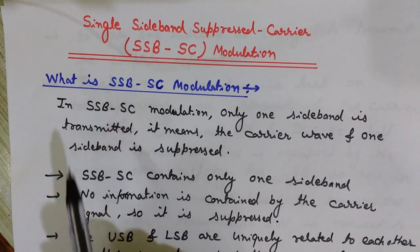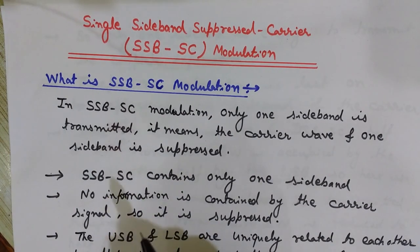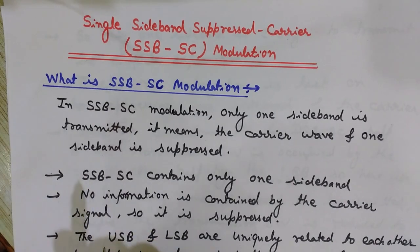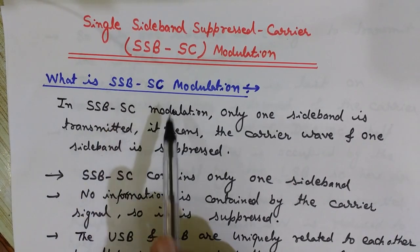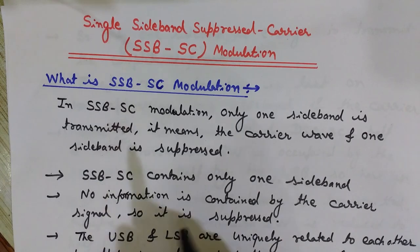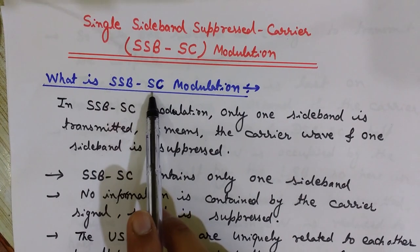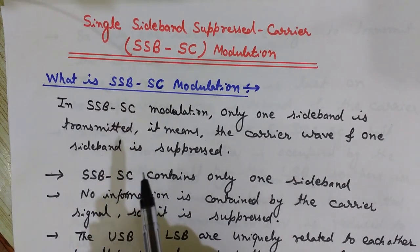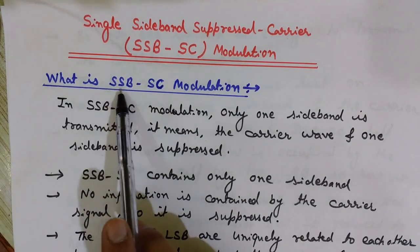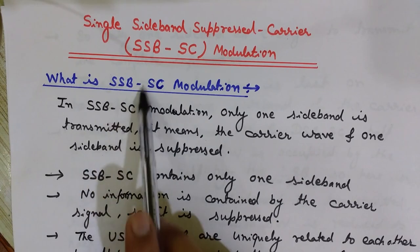The benefit of suppressing the carrier is that the carrier wave contains no information — all information is in the sidebands. There is no need to transmit the carrier. One disadvantage of transmitting the carrier is that it wastes lots of power: actually 67 percent of total power is wasted transmitting the carrier, and only 33 percent is used to transmit the sidebands.